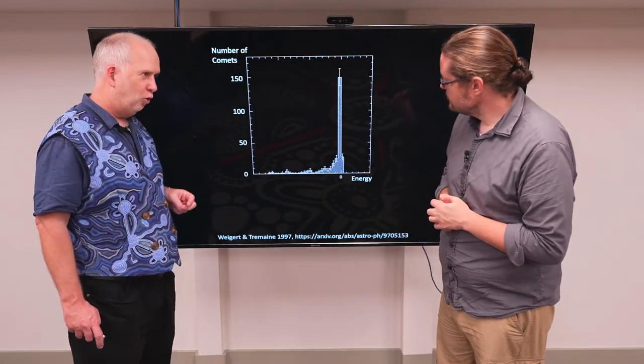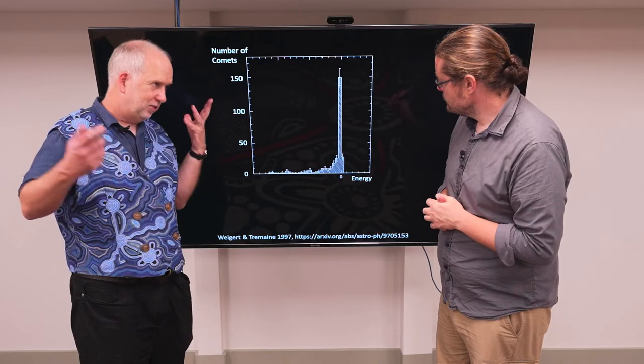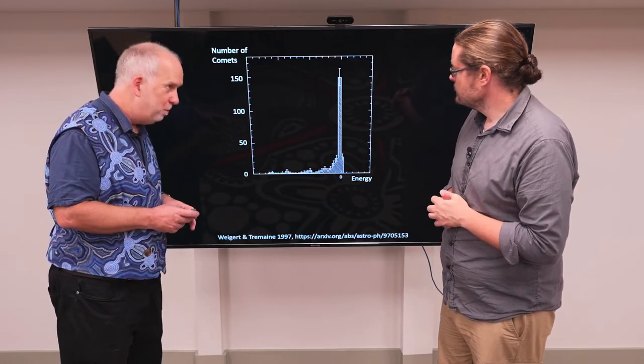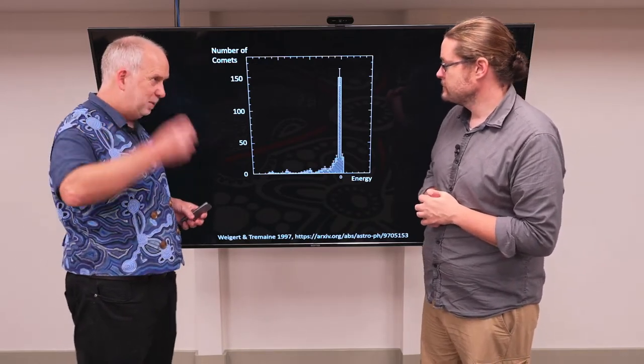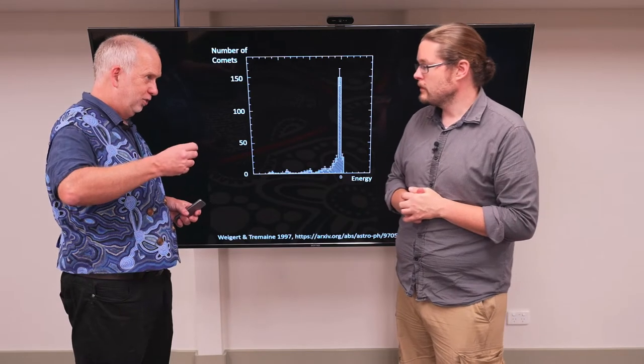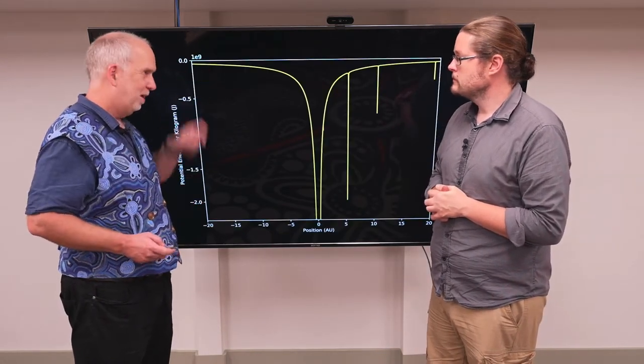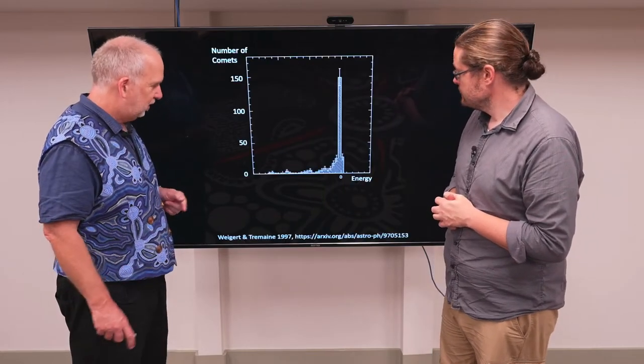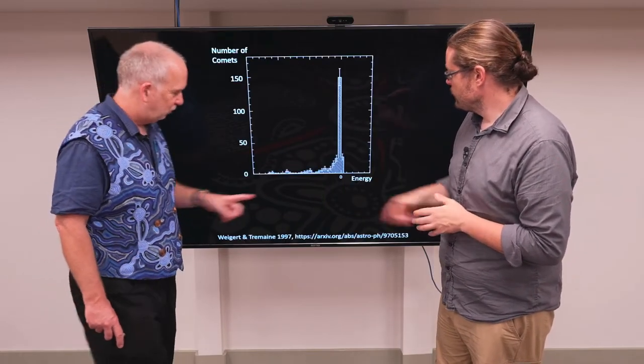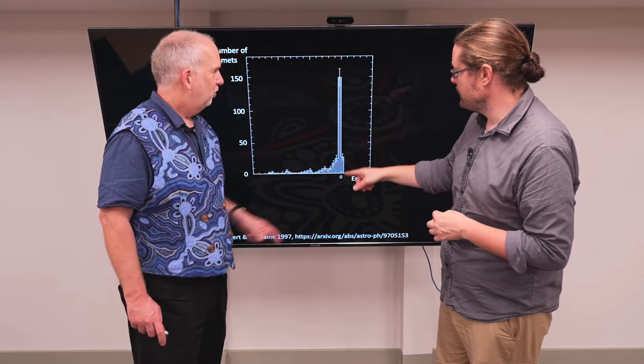So what we can see is these long period comets come through. We can measure their speed and we can measure their position. So by combining the two we can work out where it sits on an energy diagram like this. And here is a histogram showing the energy of the comets. So most of them are clearly here.